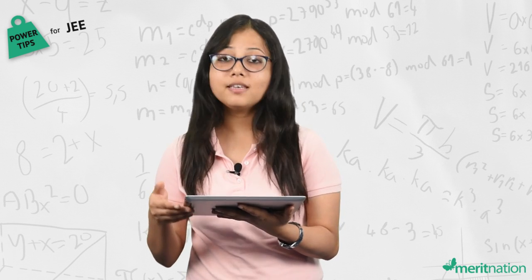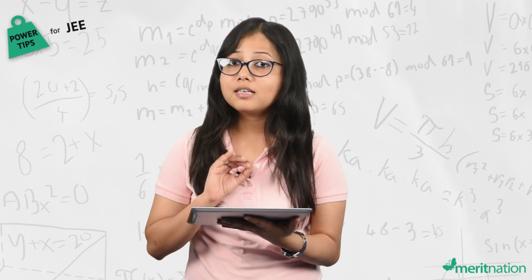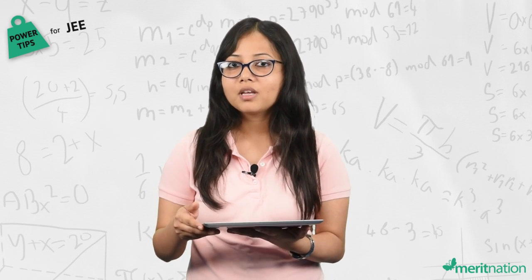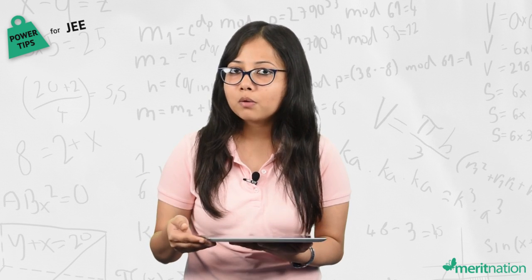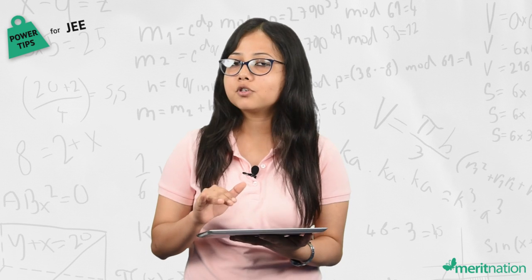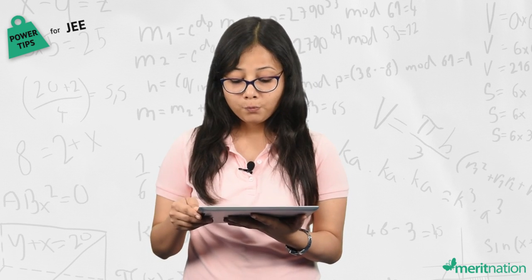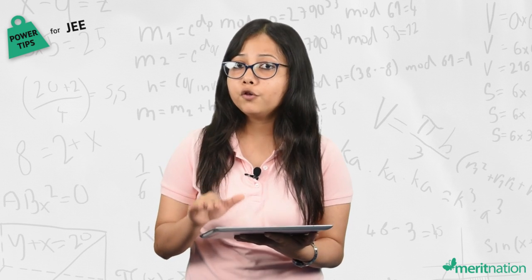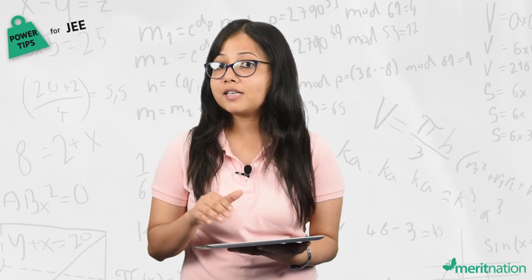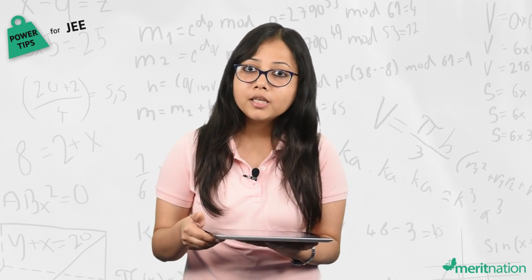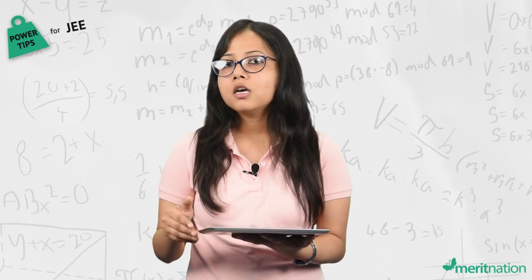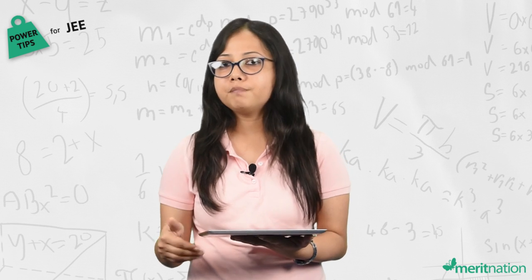Moving forward to inorganic chemistry — this is the easiest and highly scoring section. The key chapters are chemical bonding, coordination compounds, and p-block elements. Make sure you revise these chapters first, as 50% of the questions in this section come from these three chapters. Focus on hybridization calculation, molecular orbital theory, valence bond theory, CFT, optical isomers, and trends and properties of p-block elements.